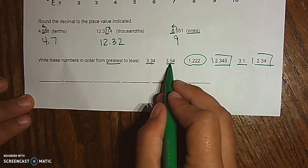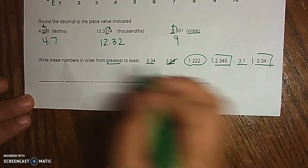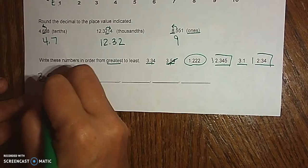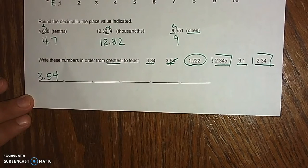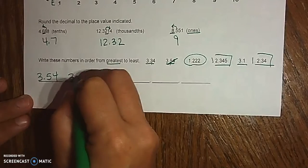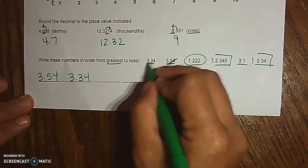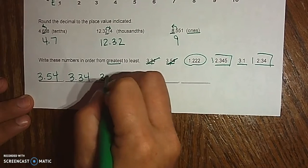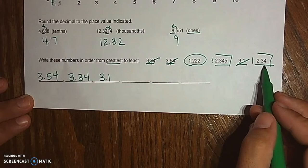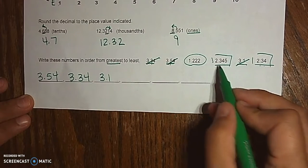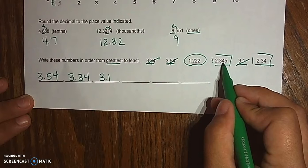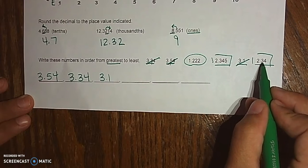We're 3.3, 3.5, 3.1. $3.54 is more than $3.34, which is more than $3.10. We've only got, we've got 2 2s, so we got 2.345, 2.34.